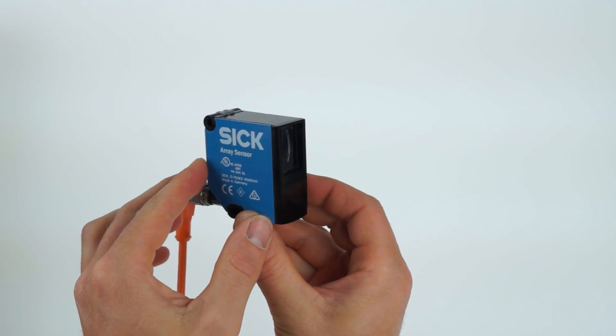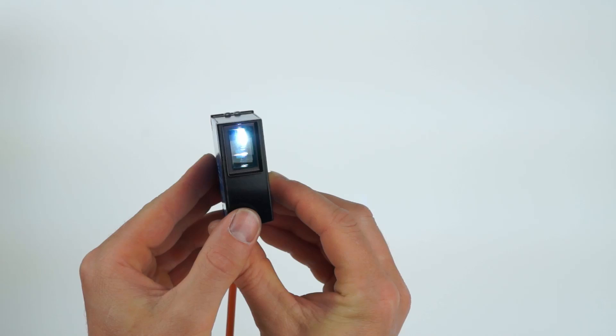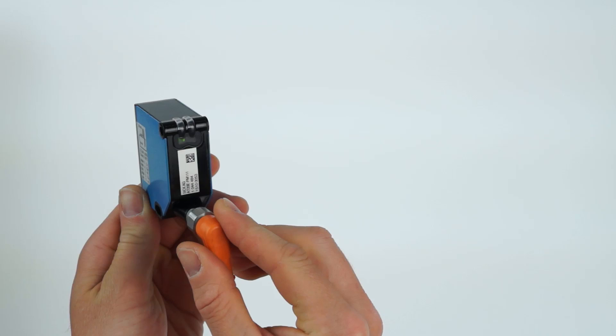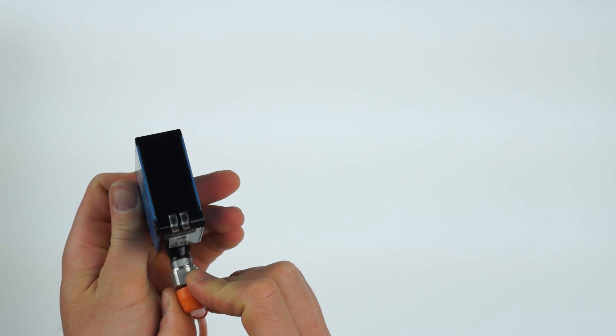This tutorial will explain the array sensor from SICK with all its options. The array sensor is the perfect solution for the precise detection and tracking of objects and contrast differences.